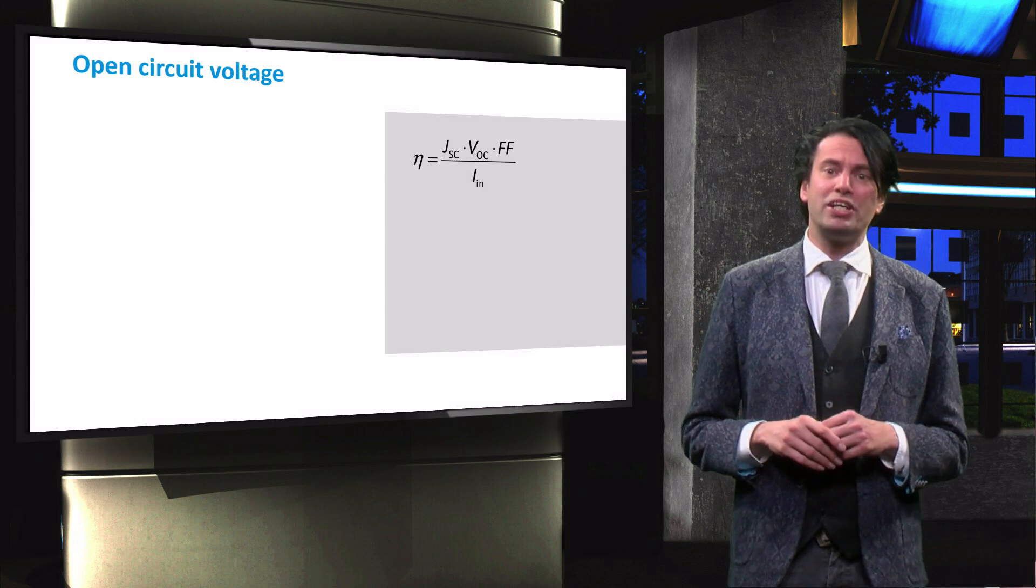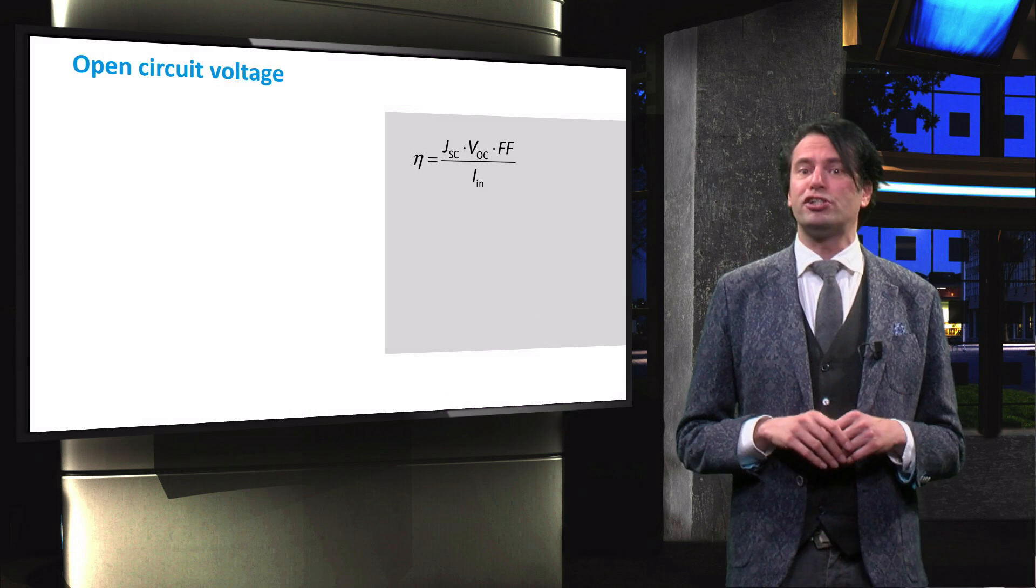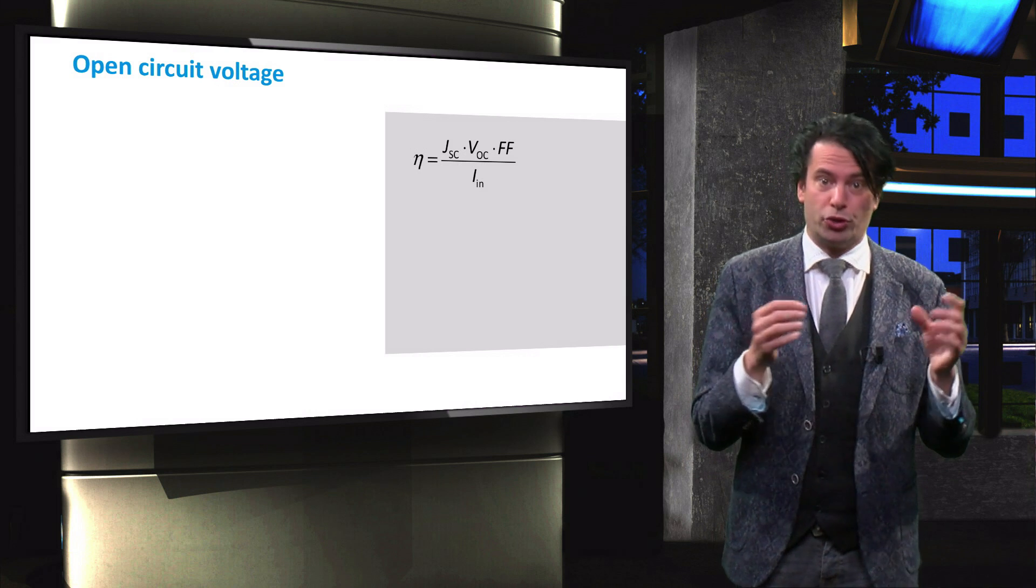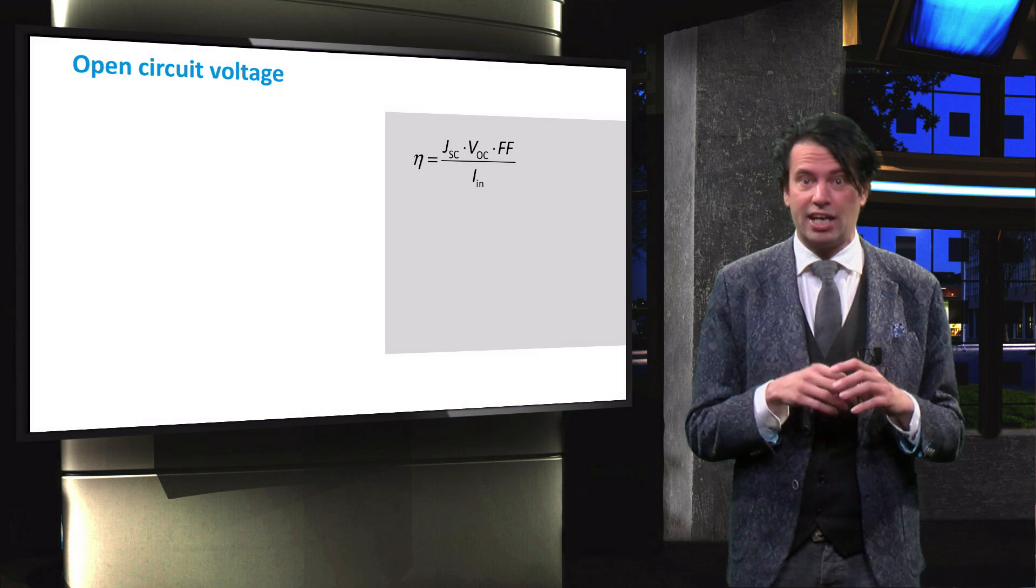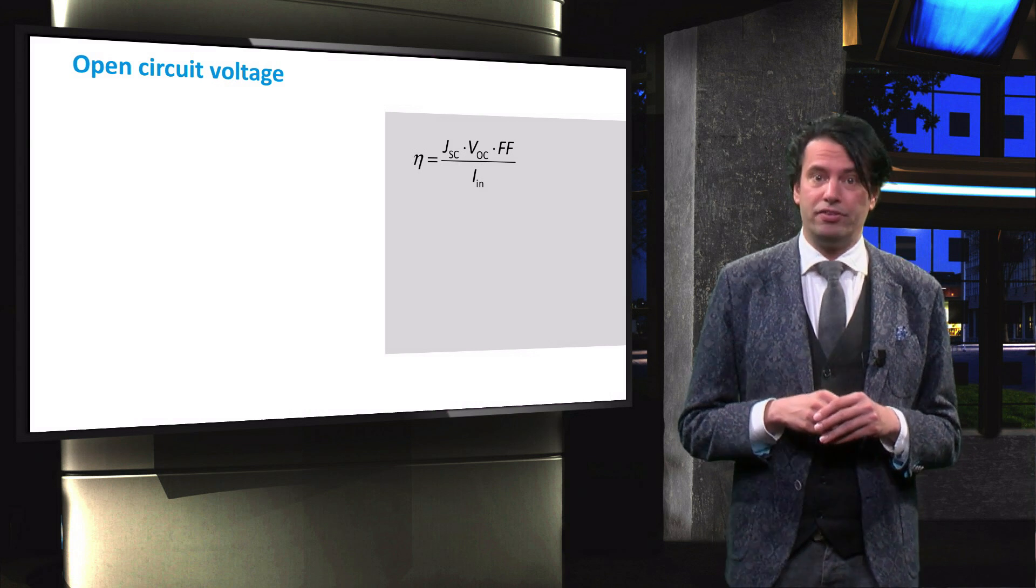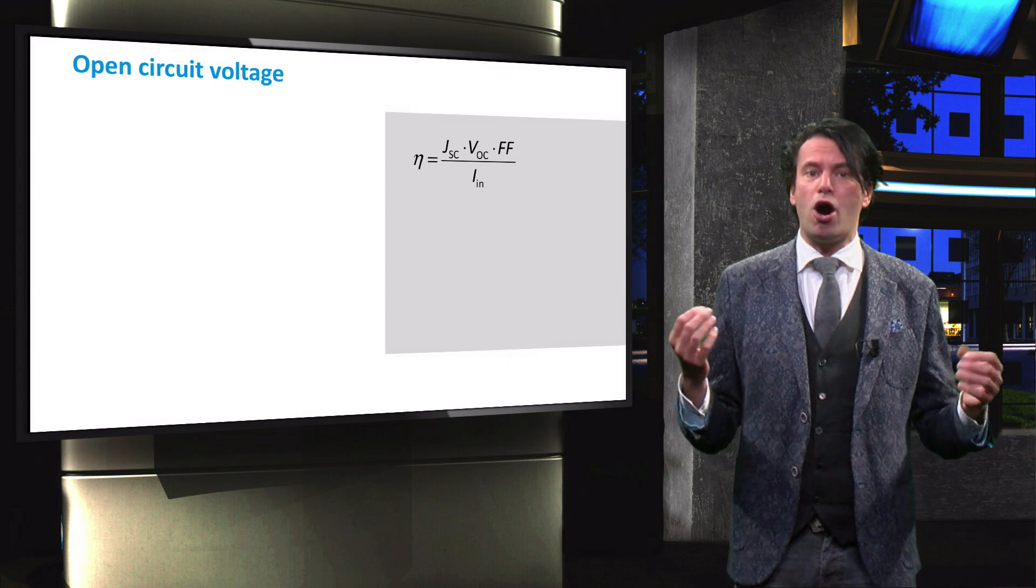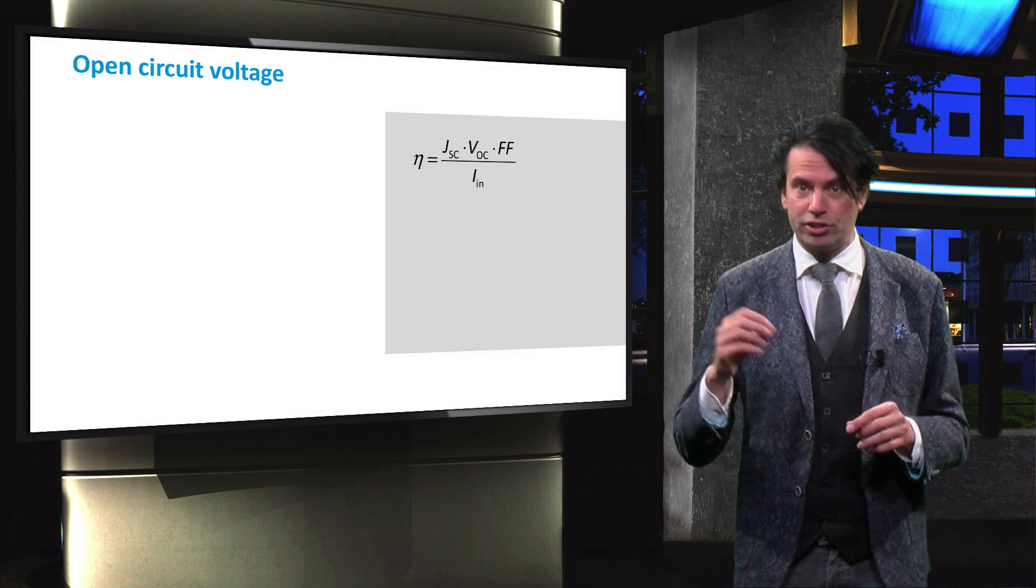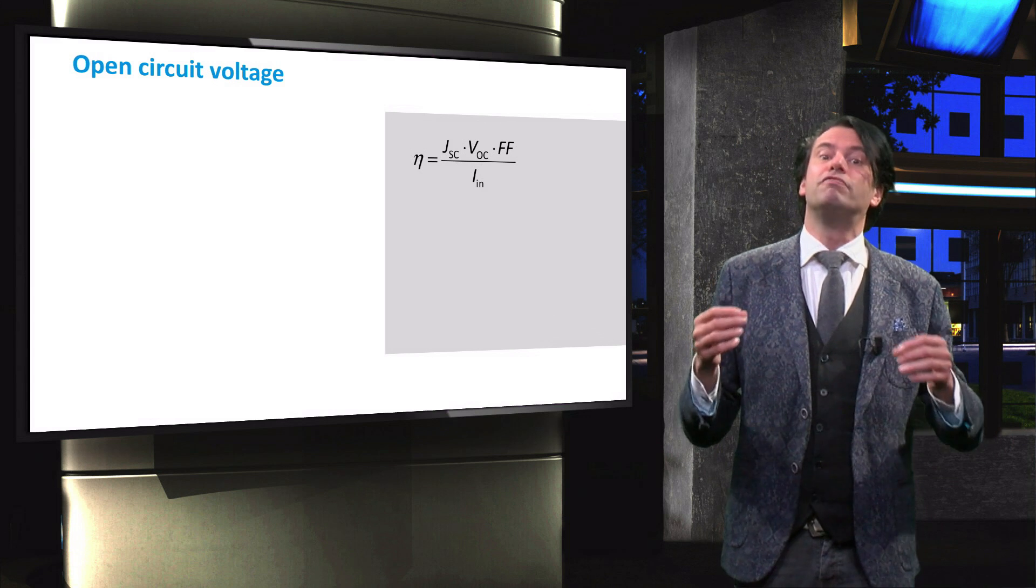With this equation we calculate the output efficiency of a solar cell. The product of the short circuit current density or JSC, the open circuit voltage VOC, and the fill factor gives the power output of the device. Dividing the output by the irradiance or incident power density gives the device efficiency.